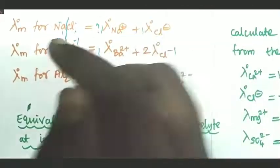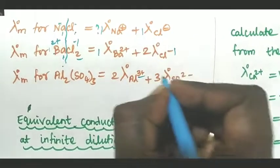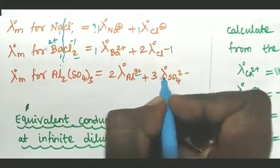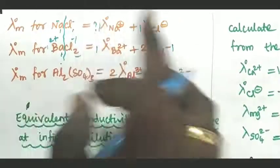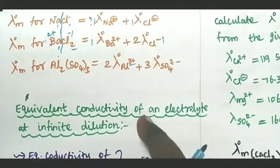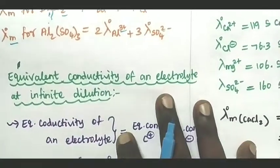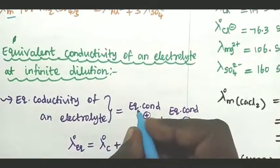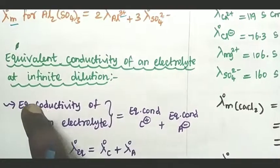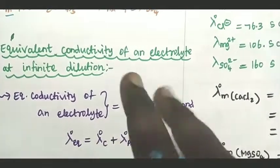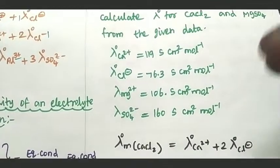For aluminium sulphate: aluminium has a 3 plus charge and sulphate has a 2 minus charge. There are 3 sulphate ions. Aluminium sulphate gives 2 aluminium ions. The equivalent molar conductivity at infinite dilution equals the sum of equivalent conductances of the cation and anion. Let's look at what types of sums you can apply using the Kohlrausch law.